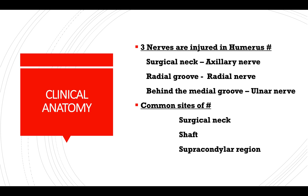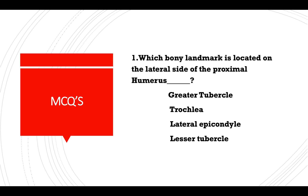Clinical anatomy: three nerves are injured in humerus fractures — at the surgical neck, the axillary nerve; at the radial groove, the radial nerve; and behind the medial epicondyle, the ulnar nerve. Common sites of fracture are the surgical neck, shaft, and supracondylar region.